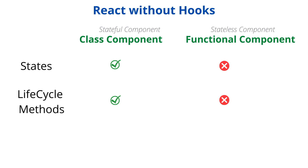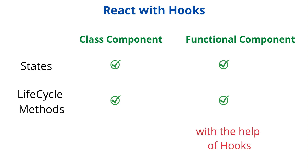When we talk about React applications, states and lifecycle methods are required most of the time to add dynamic behavior to your component. So developers used to write class components for that, and if they had created a functional component during the initial stage of development and later needed state in that component, they had to convert their functional component to a class component. To get rid of this problem, the React team introduced the concept of hooks. Now we can use states and lifecycle methods inside functional components as well, and functional components are quite powerful — they can do pretty much everything a class component can do.